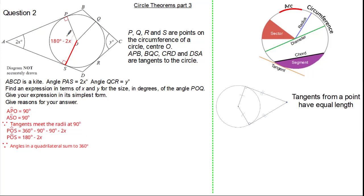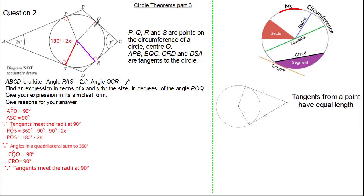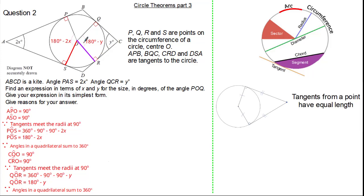Now we have an expression for angle POS. Let's find an expression for angle QOR. Drawing in another radius, we can identify angle CQO as 90 degrees and angle CRO as also 90 degrees, because tangents meet the radius at 90 degrees. We have another quadrilateral, so angle QOR is 360 subtract 90, subtract 90, subtract Y, giving us an expression of 180 minus Y. This is because angles in a quadrilateral sum to 360 degrees.